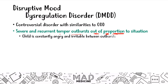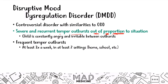This child may be constantly angry and irritable between outbursts, and they may have frequent temper outbursts — at least three a week in at least two settings: home and school. This is really important because you want to isolate the cause. You want to make sure this is not happening from an extrinsic cause, like struggling at home or just having a bad week. You want to make sure it's something intrinsic that's causing these recurrent temper outbursts, so you can classify it as DMDD.